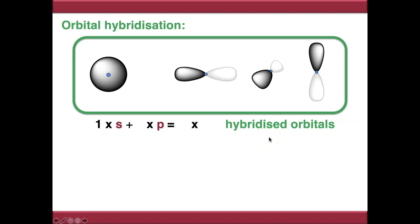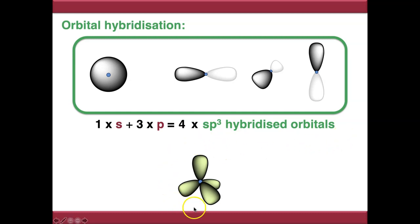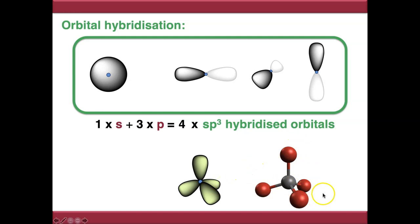Starting with the first situation — mixing everything together. We're mixing one s orbital with three p orbitals: one plus three gives us four orbitals out. So we get four sp3 hybridised orbitals. This hybridisation mode is called sp3 because you're mixing one s with three p orbitals. sp3 hybridised orbitals look like this — they're essentially an average of what you've put in — and this looks familiar because this is a tetrahedral geometry. This is how all single-bonded carbon works.